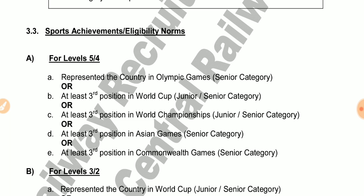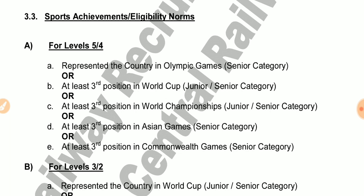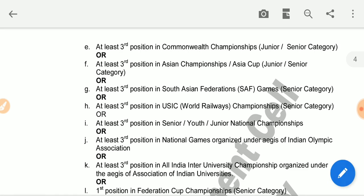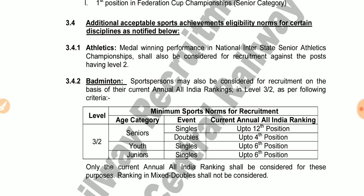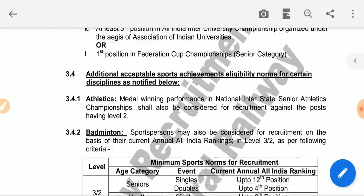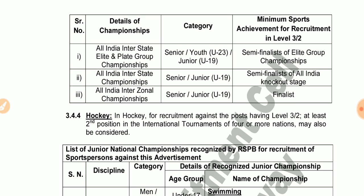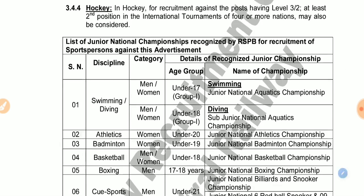If you are qualified in sports, you should be able to represent the country in the Commonwealth Games. You can apply for any category or position, including additional qualifications for cricket and athletics. You can apply for detailed championships and find full information on the index.